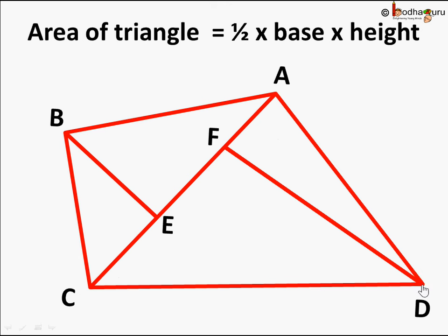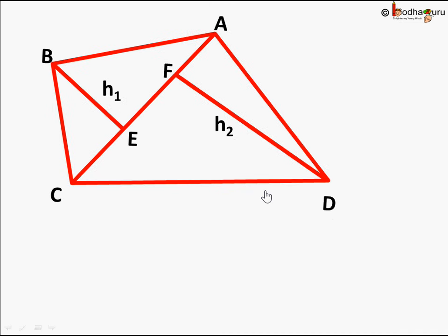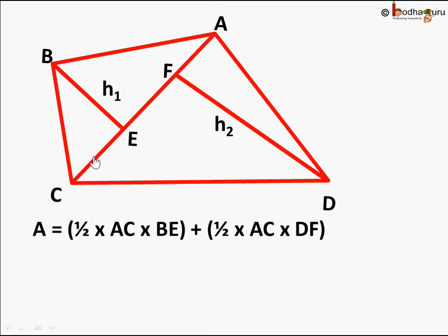Similarly, we draw a perpendicular line from vertex D to the line AC — this meets at a right angle. So the area of triangle ACD is half of base AC and height DF.